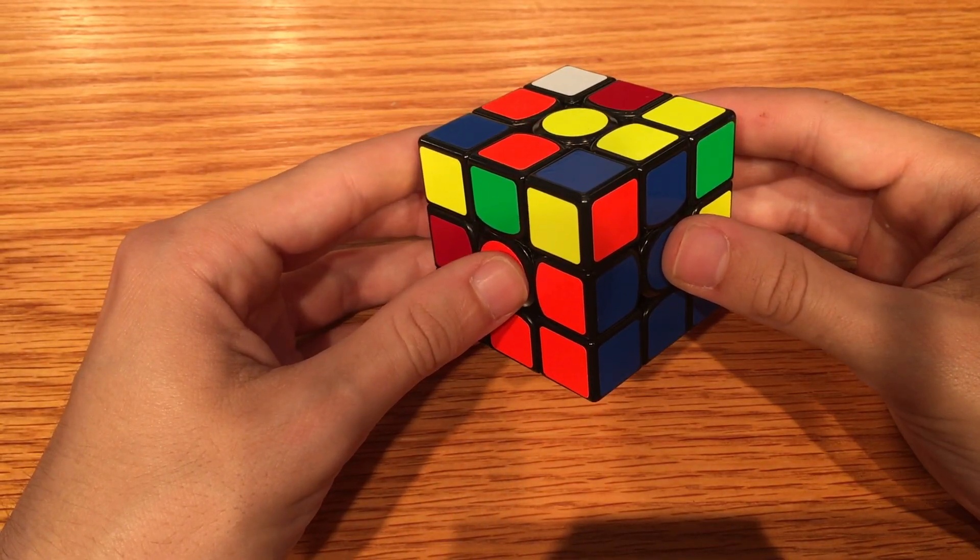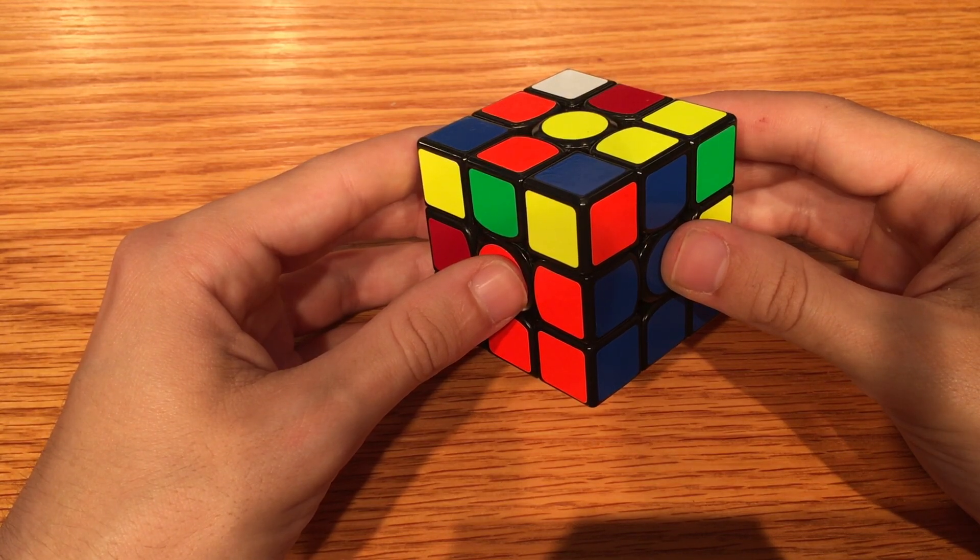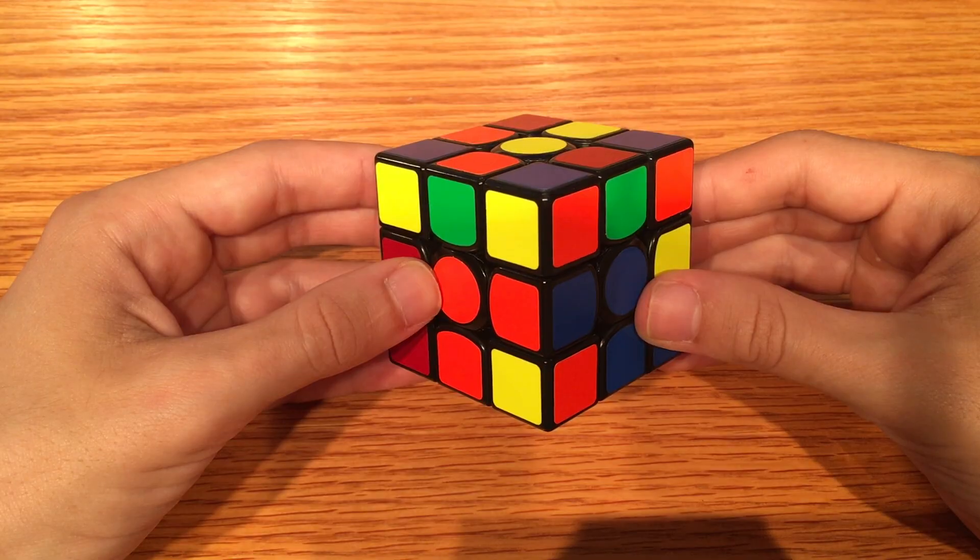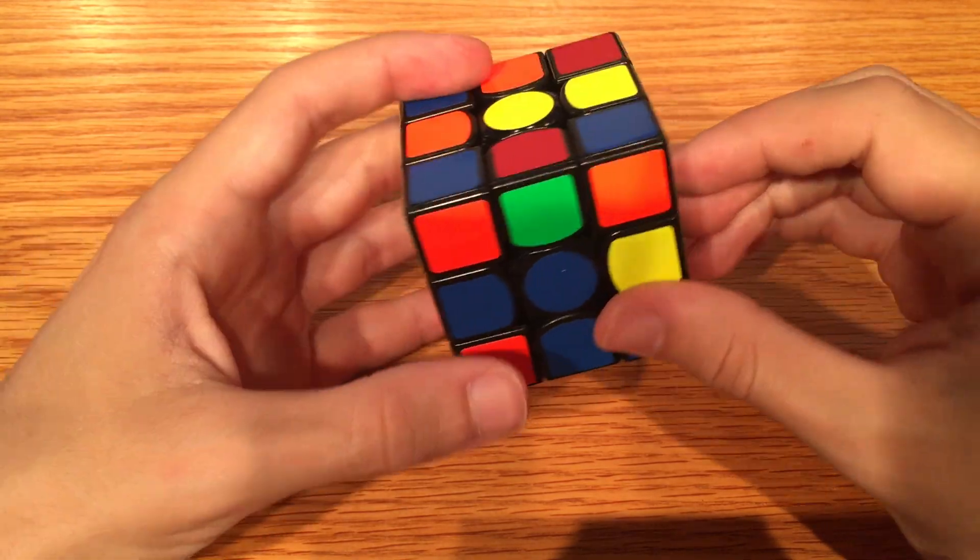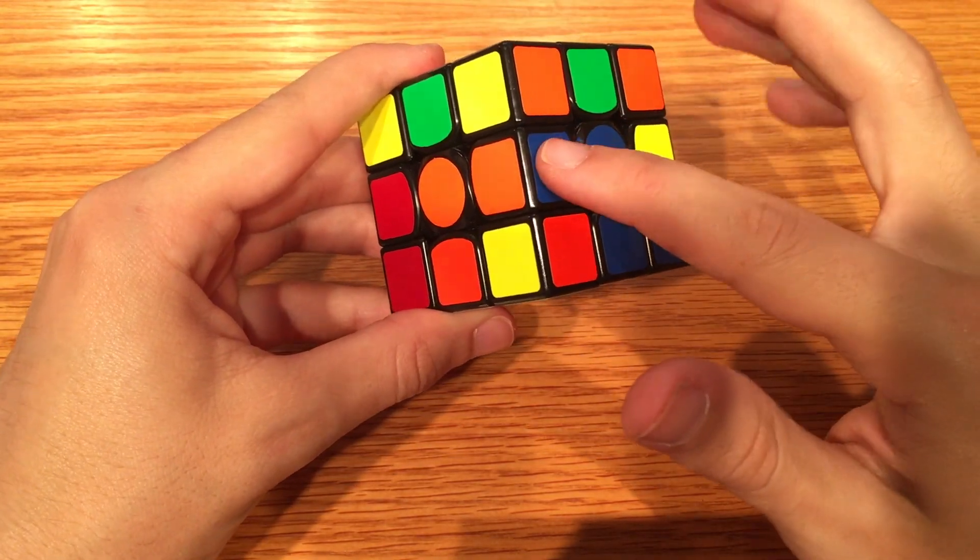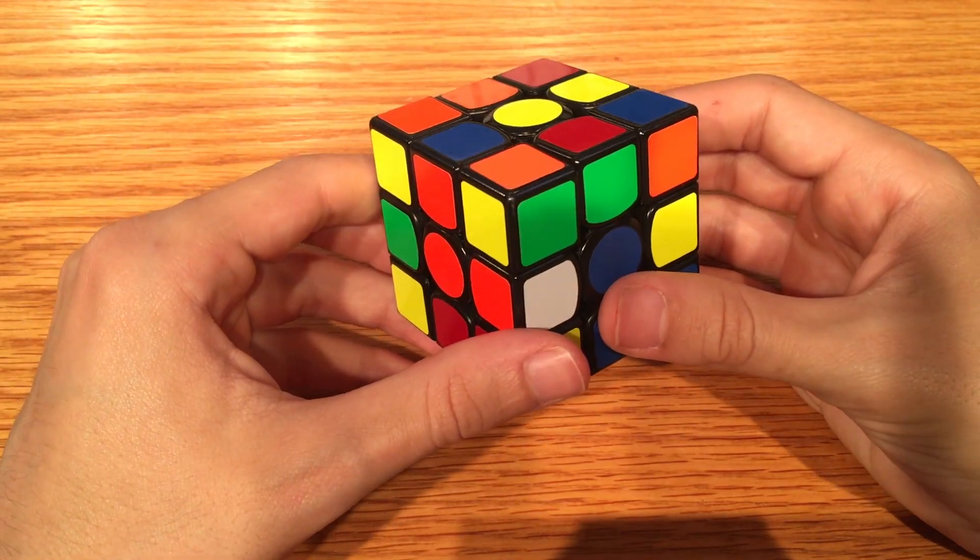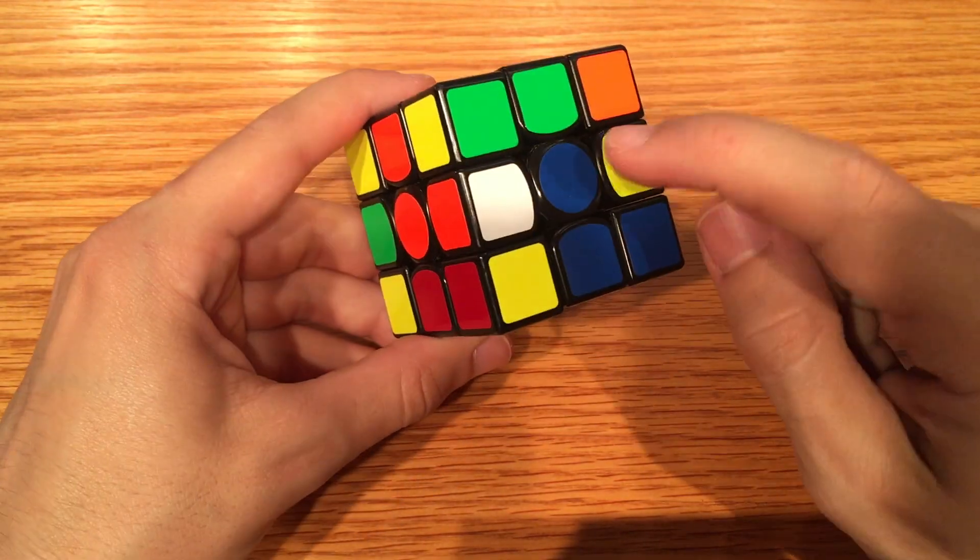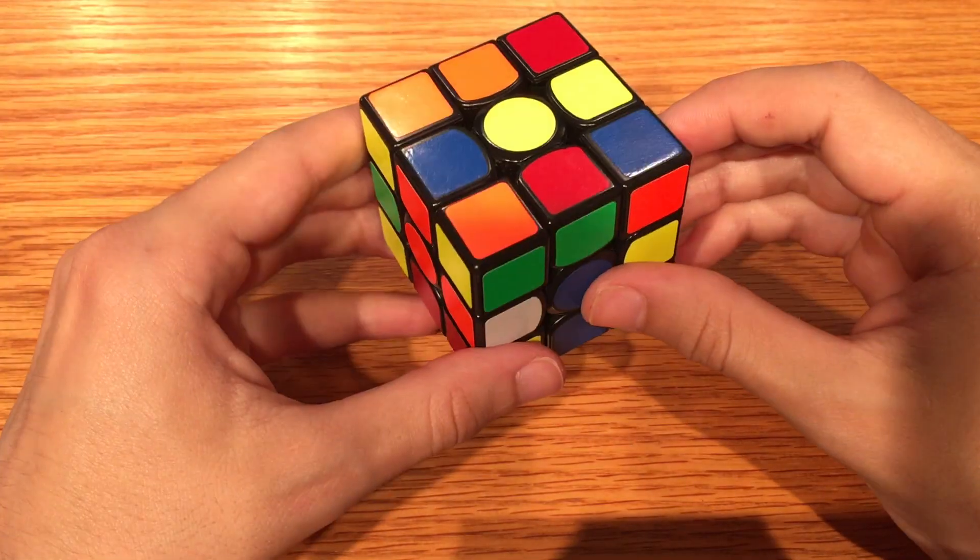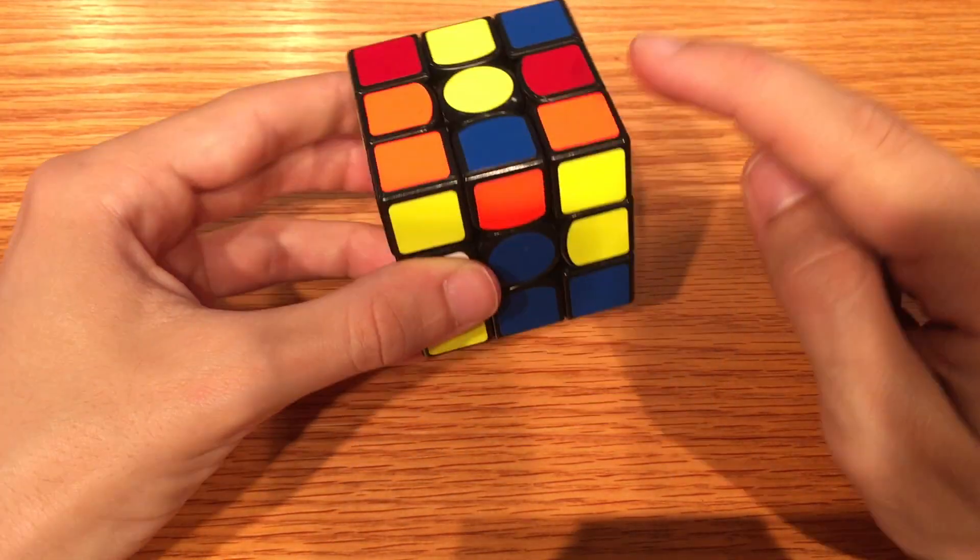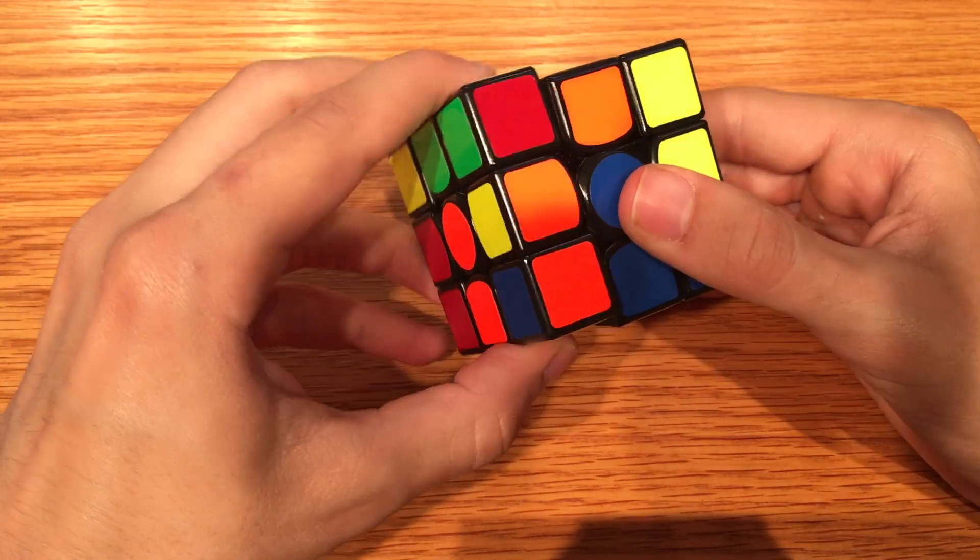Although there is only one step to pairing, there are three obstacles you may encounter. Obstacle number one: either the corner or edge is not on top. In this case, our edge is not on top. To fix this, just throw it to the top. It's that simple. This will mess up a cross piece, so make sure to move the top layer so that neither your corner nor edge gets moved when you reset the cross piece.